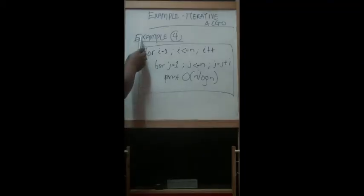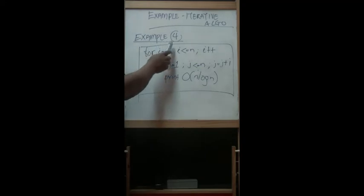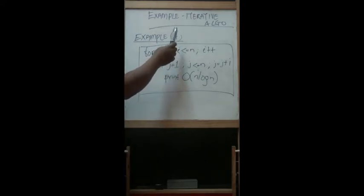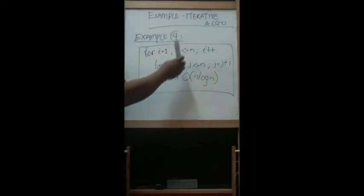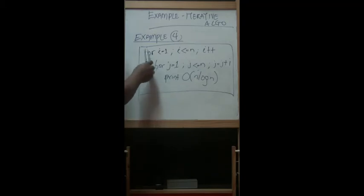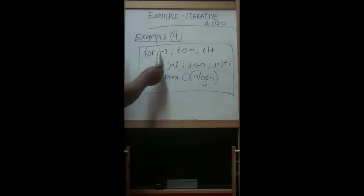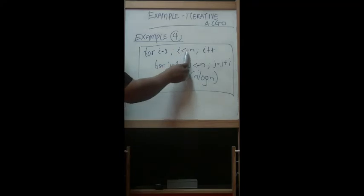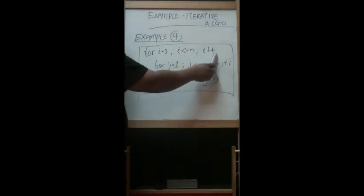This is example number four for the analysis of an iterative algorithm. Look at this algorithm — we have two loops. The outer loop: i equal to one, i less than or equal to n, i plus plus, which increases by one.